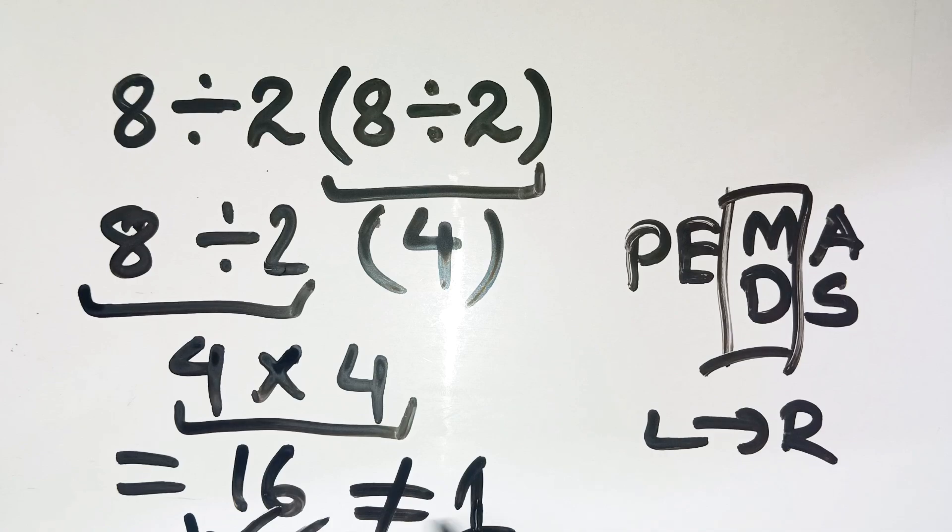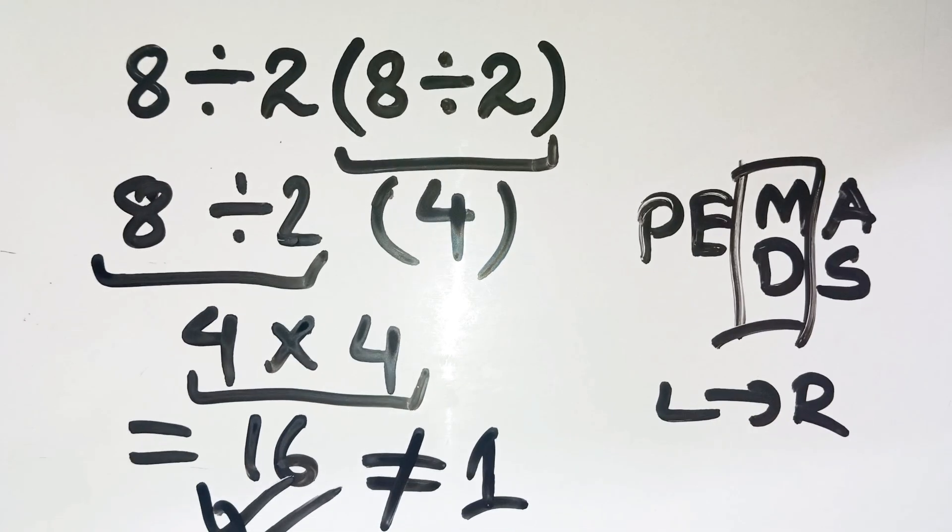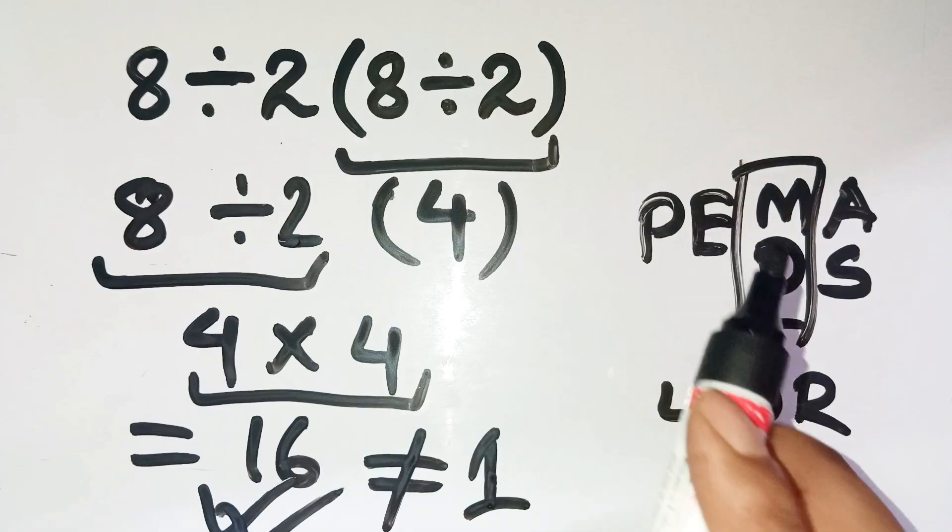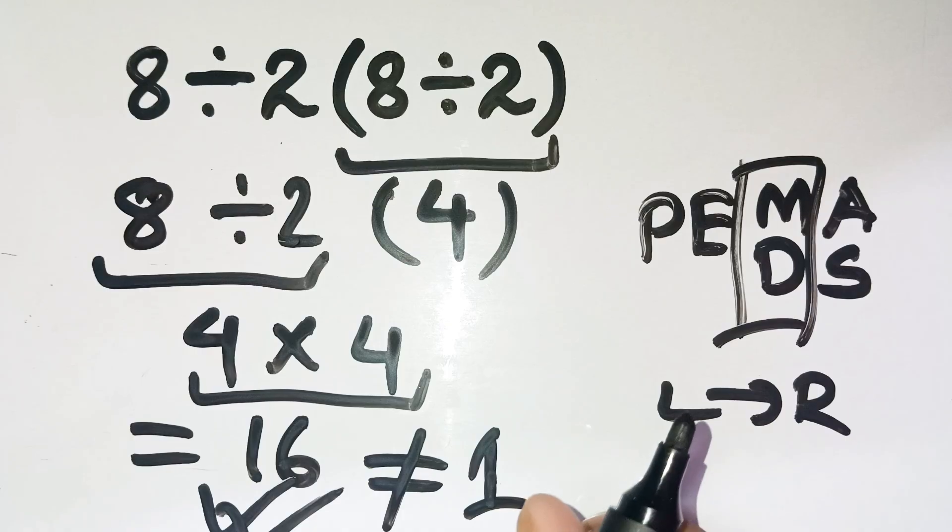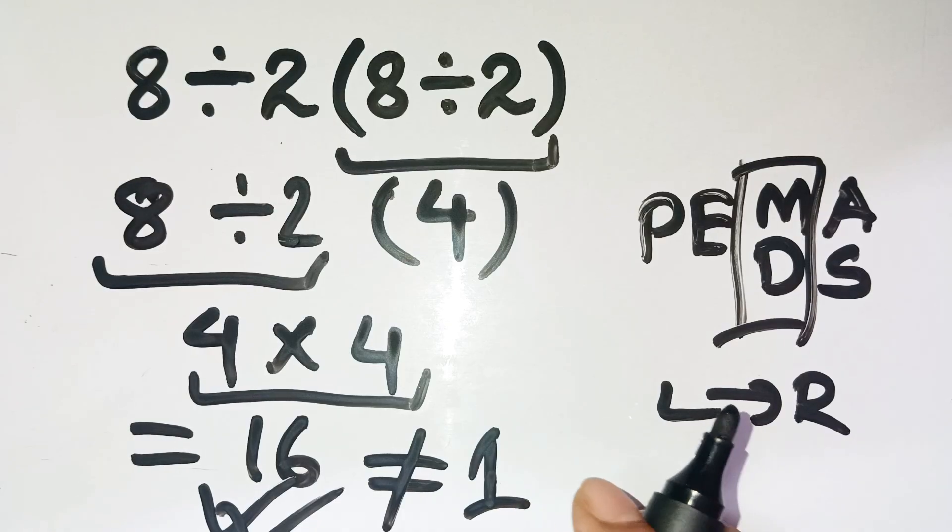Shocking, right? What looked like a quick and obvious 8 divided by 8 equals 1 turns out to be completely different when you respect the order of operations. This is one of those math traps that plays with your instincts. Your eyes want to simplify inside the parentheses and jump ahead.